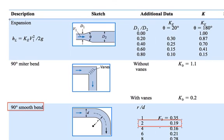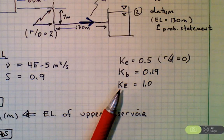For the exit, use the expansion here. Theta is 180 degrees. D2 is effectively infinity, so the ratio of d1 to d2 is 0. And so you look right here, and the minor loss coefficient is 1.0, corresponding to an angle of 180 degrees. All right, document the minor loss coefficients. Notice the use of subscripts.